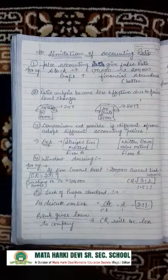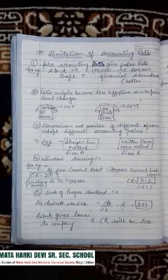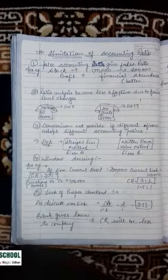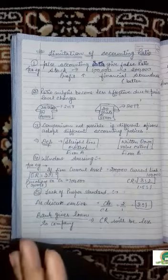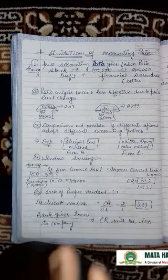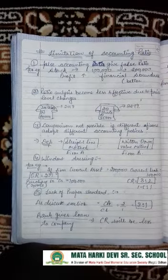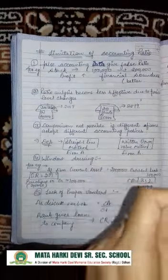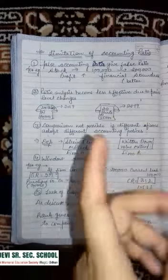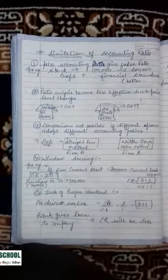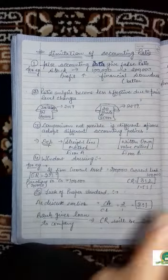The first point is: false accounting data gives false ratios. If you are using false accounting data in your financial statement and you are calculating the ratios according to that data, it will give you false ratios also.